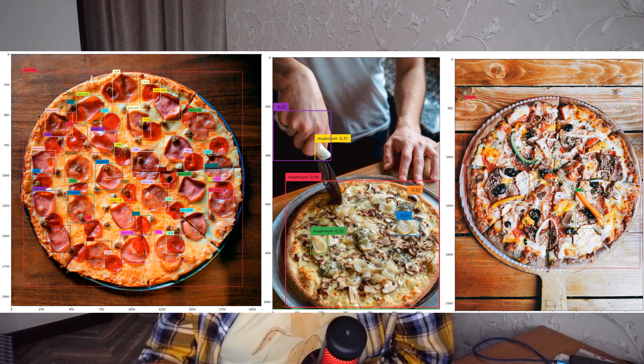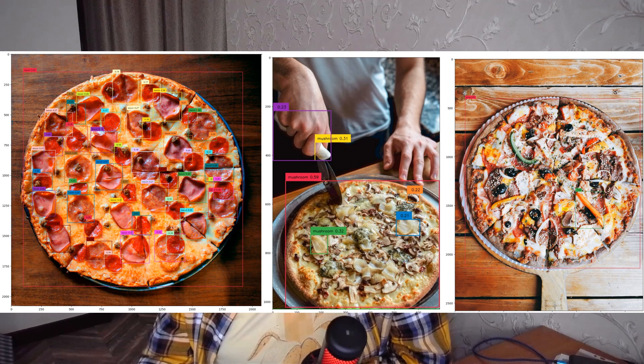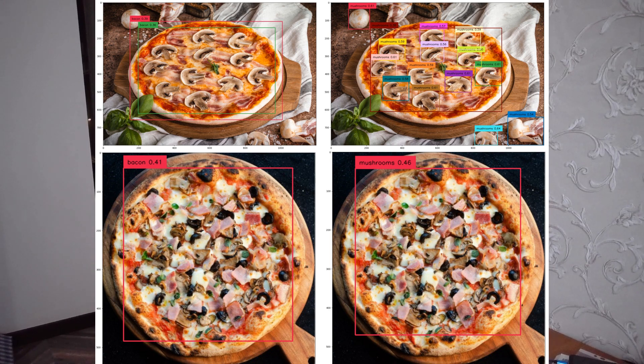The second limitation is data drift. Let's return to the pizza example. Let me show you how Grounding DINO works on pizza images. As you can see, the detections are incorrect even for excellent pizzas. Sometimes you can detect something, but if you want to recognize your type of pizza or your type of topping, you need to train your own model.